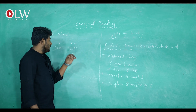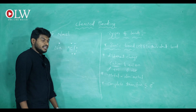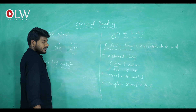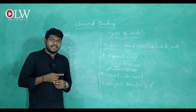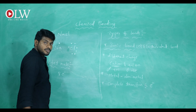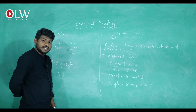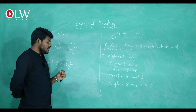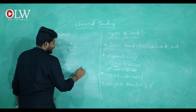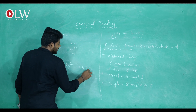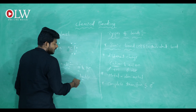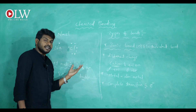Before explaining further, there is a small but important definition — the octet rule. The octet rule states that any element in nature must contain eight electrons in their outermost shell, also called the valence shell. Oct means eight, so eight valence electrons. Exceptions to this rule are hydrogen and helium, which have a doublet configuration — only two electrons in their outermost shell.